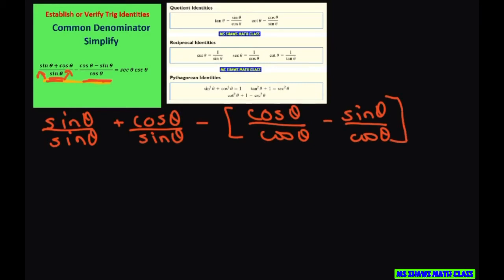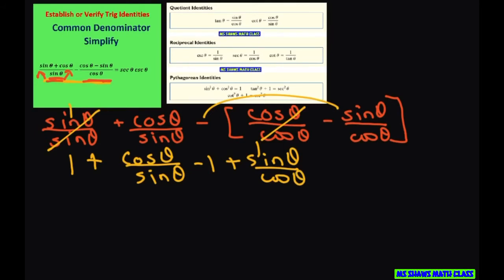Alright, now these both equal 1. So what you have is 1 plus cosine of theta minus 1 and then this is going to be plus sine of theta cosine of theta. Now what happens is the 1s cancel out and I'm just going to erase this to make it look a little better.